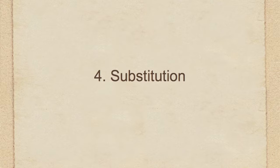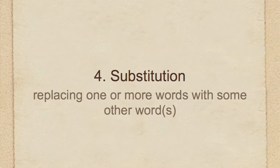Besides omission, addition, and transposition, substitution is the fourth kind of textual variant. Substitution is simply the substitution of one word for another. For example, in John 4:1 — 'when Jesus knew' versus 'when the Lord knew.' Is it 'Jesus' or is it 'the Lord'? That's a substitution, and those are the kinds of things we have as well.